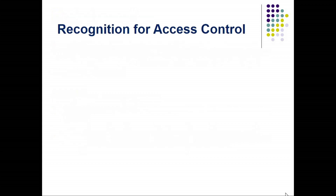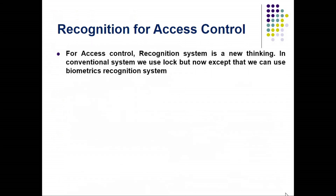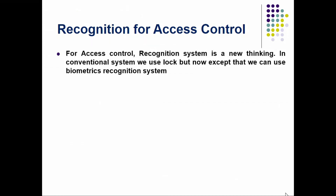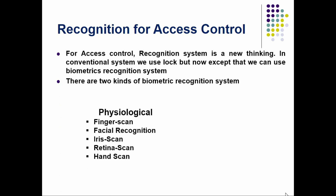Recognition for access control. Using a recognition system for access control is a new approach. In conventional systems we use a lock, but now we can use biometric recognition systems instead. There are two kinds: physiological — finger scan, facial recognition, iris scan, retina scan, and hand scan — and behavioral — voice scan, signature scan, and keystroke scan.